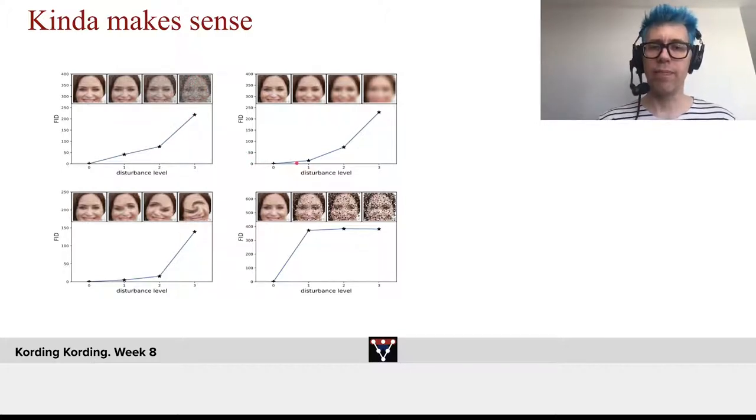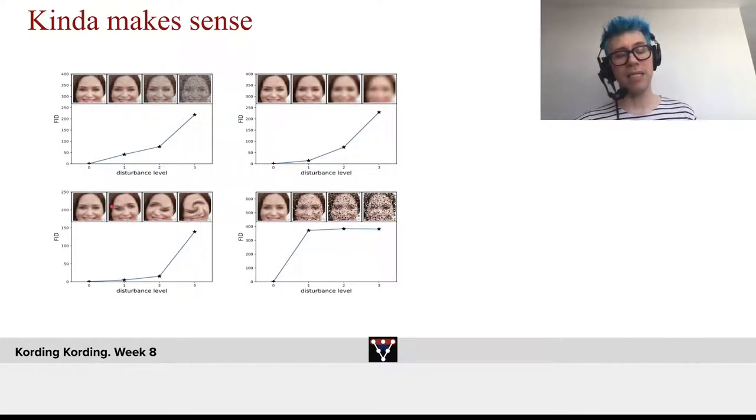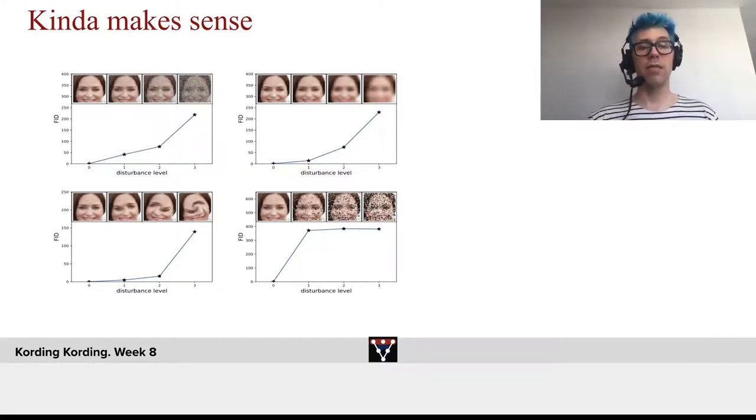If we blur it, the FID goes up. If we do some rotational things, it goes up, interestingly only very little. Look here, this face to a human clearly doesn't seem right. But suddenly, the activations higher up in a ConvNet may be quite similar. Which is actually interesting because it means that there's something missing there. We can add individual random pixels to it and more and more. We already start having very different levels if we have small amounts of this extra noise. So FID kind of makes sense as a measure of how real stimuli are.